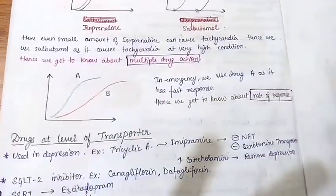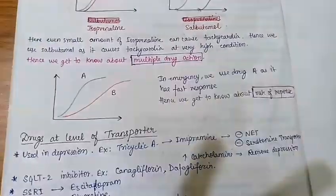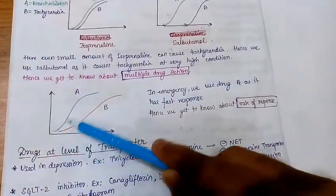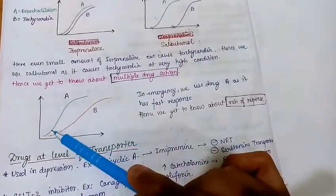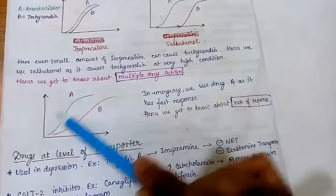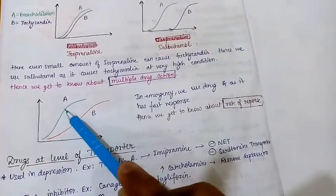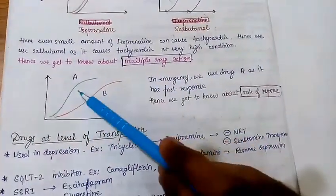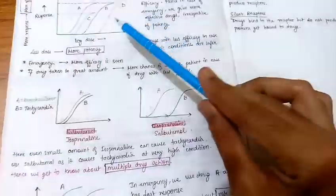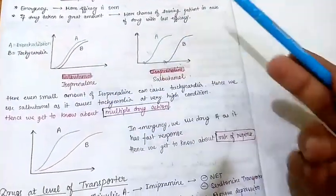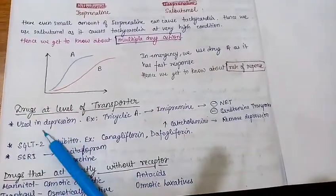In emergency we look for the steeper graph. If drug A has a steeper graph compared to drug B, we use A in emergencies because its action starts earlier and achieves minimum response first. So this graph gives us information about the rate of response of different drugs. The four uses of this graph are: potency, efficacy, selectivity, and rate of response.